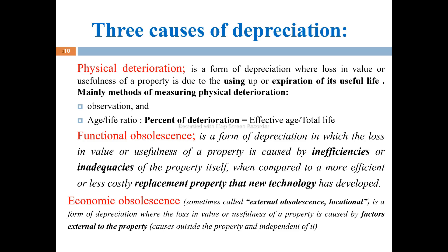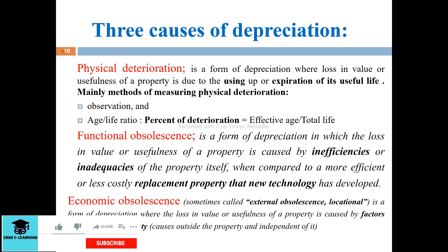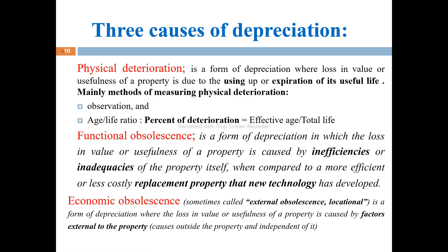Unlike physical deterioration where the asset is physically damaged or its useful life has expired, functional obsolescence arises when comparing to similar newer properties. For example, old equipment that used to process industries may be replaced by new technology, making the old equipment functionally obsolete — it is inefficient and inadequate compared to the new technology, so it is depreciated under functional obsolescence.